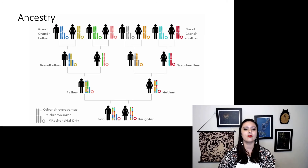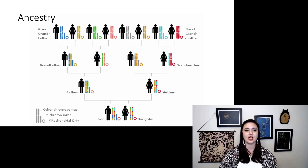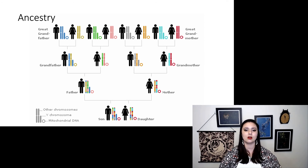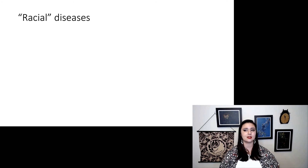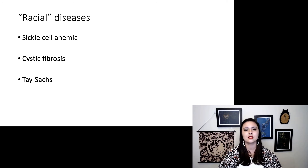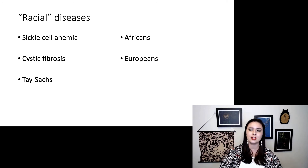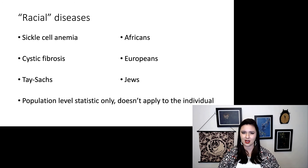It can get confusing because some people like to talk about racial diseases — meaning sickle cell anemia, cystic fibrosis, Tay-Sachs disease. Sickle cell anemia tends to be more frequent in Africans, cystic fibrosis in Europeans, and Tay-Sachs in Jews. However, this is a population-level statistic — it doesn't apply to the individual. Let's talk about what's going on with some of these.